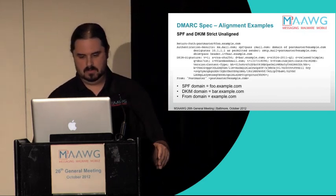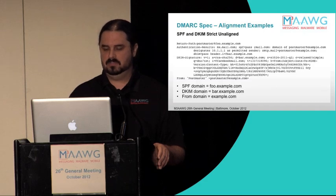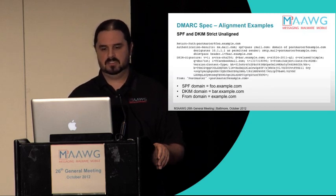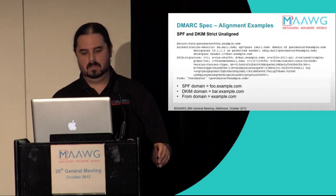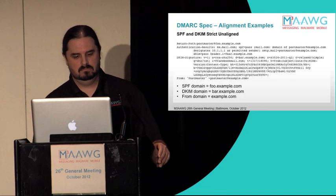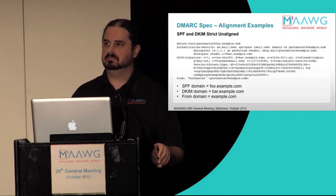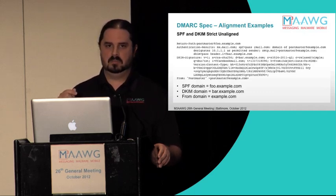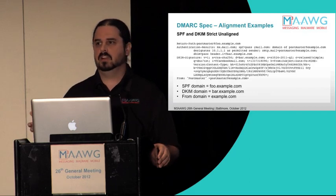Here's a potential false positive example. The MAIL FROM is a subdomain foo.example.com as seen in the return path header, and both SPF and DKIM pass. The D= domain for DKIM is bar.example.com, and the From domain is example.com. These are cases where the authenticated identifiers are subdomains of the From domain. But because example.com has requested strict alignment, this email is not aligned. If they had selected relaxed alignment, it would be aligned because they all share the same organizational domain.